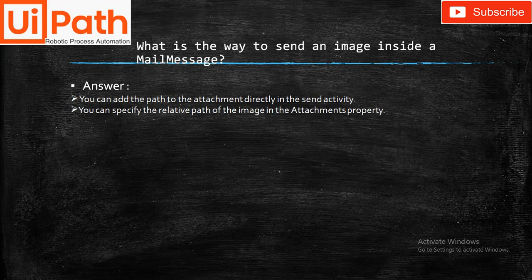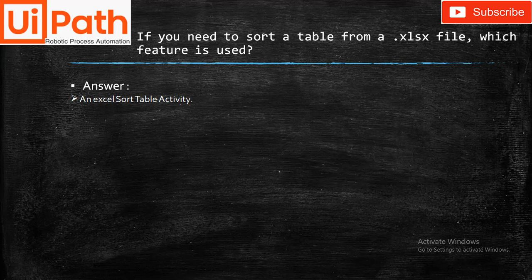What is the way to send an image inside a mail message? There are two ways: we can add the path to the attachment directly in the same activity, or we can specify the relative path of an image in the attachment property.